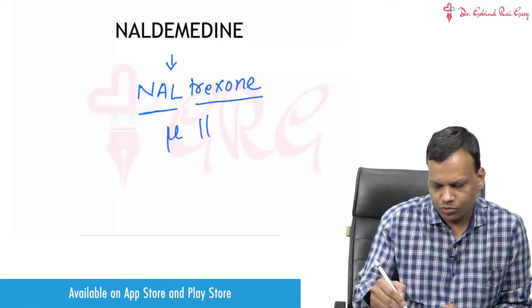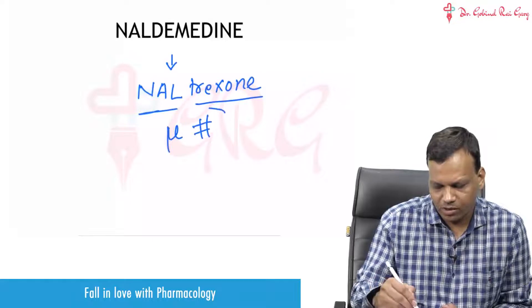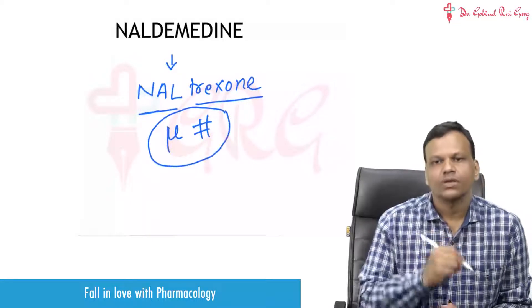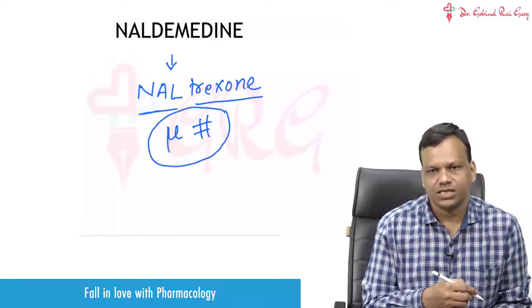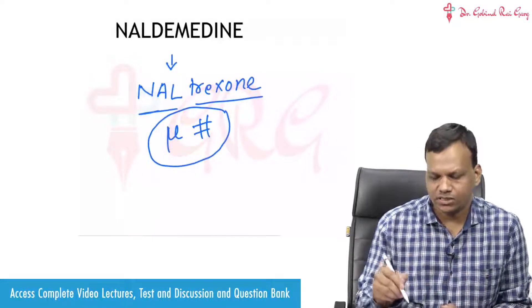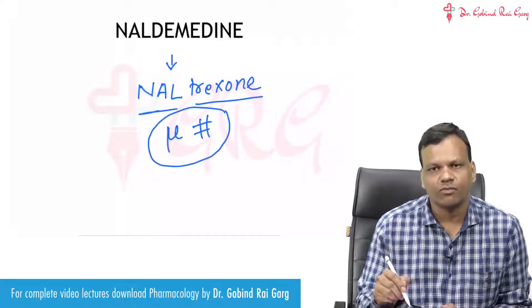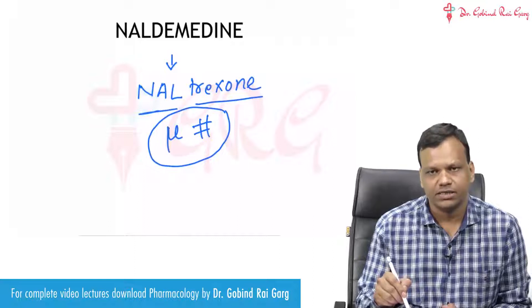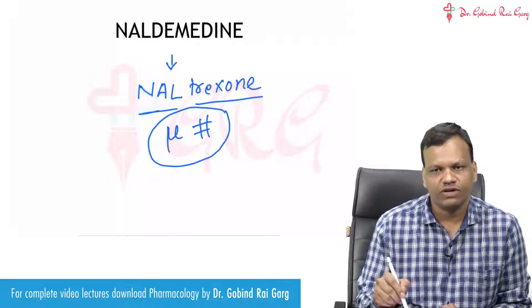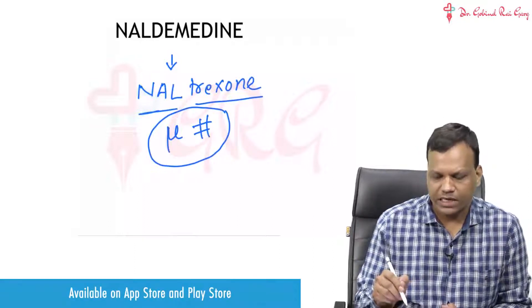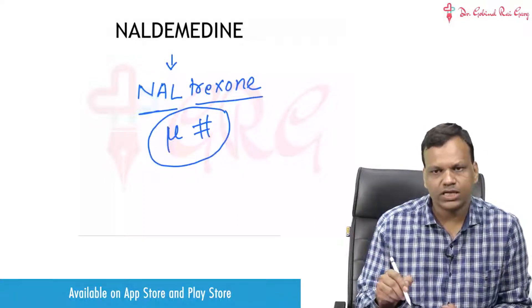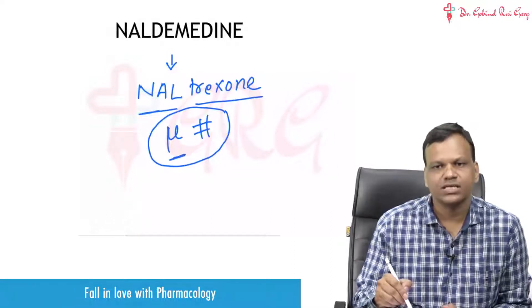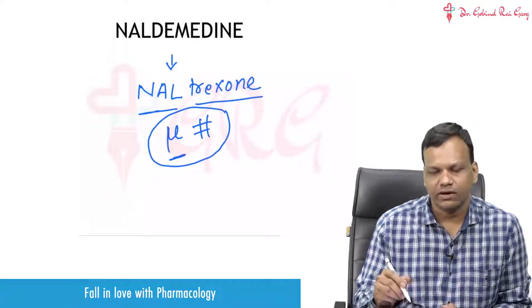This is also a mu receptor antagonist, but the special thing is it is not absorbed from the GIT. So when we give it orally, it will act only in the GIT and block the mu receptors there.